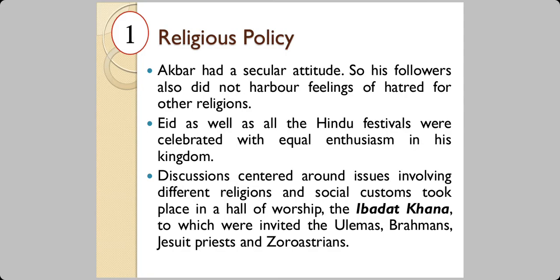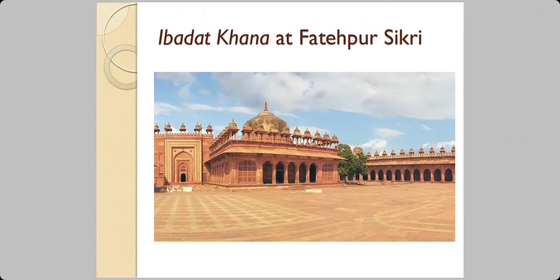He had a place of worship known as Ibadat Kana, to which he invited ulemas — the Muslim religious leaders — as well as Brahmins, Jesuit priests who are Christians, and Zoroastrians who are Parsis. They were all invited to this hall of worship, where he would discuss issues involving different religions and different social customs. This is a picture of Ibadat Kana, located in Fatehpur Sikri in Rajasthan.